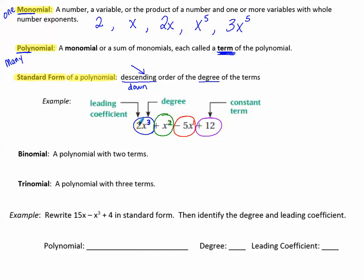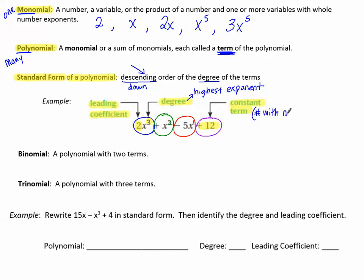The number in front, when written in standard form, is called the leading coefficient of the polynomial. The highest exponent is called the degree of the polynomial — think of degree as the greatest exponent. And then you have the constant term, which is the term that has no variable with it — a number with no variable.